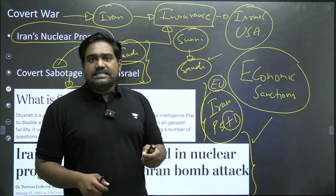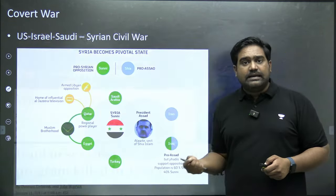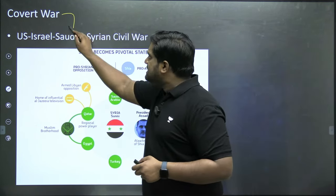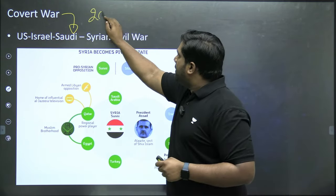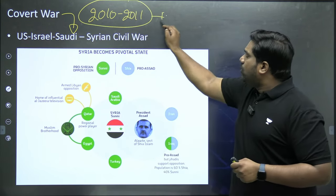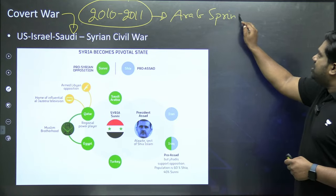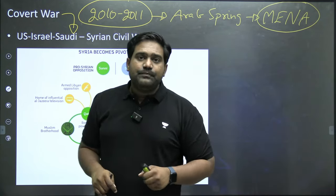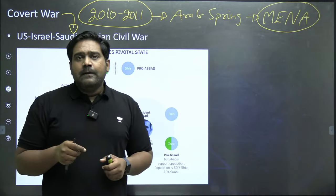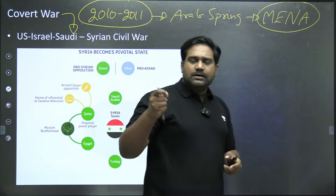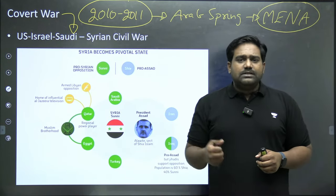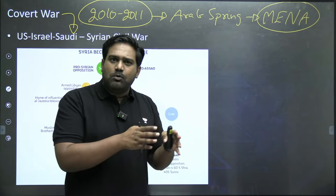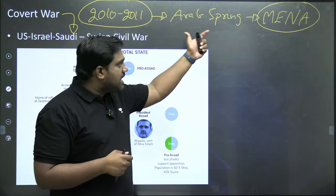Iran feels crippled by these sanctions, and that is also a reason why Iran tends to react more aggressively against the US and its allies. During these events, by 2010-2011, a pro-democracy revolutionary movement broke out called the Arab Spring. Across the MENA region — the Middle East and North Africa — a wave of pro-democracy protests started spreading, primarily powered through social media. It started in Tunisia, where people rebelled against authoritarian dictators, organizing protests primarily through Facebook, WhatsApp, and other new social media platforms that had just emerged in 2010-2011. This was a successful revolution in Tunisia — the dictator was thrown out.